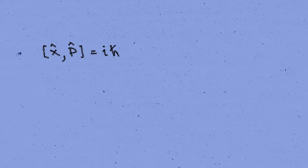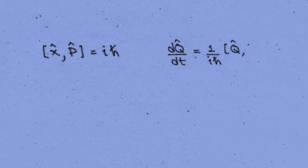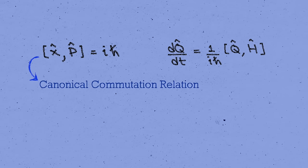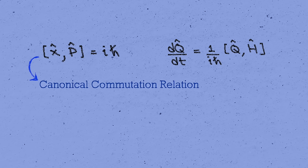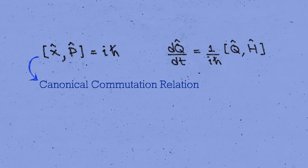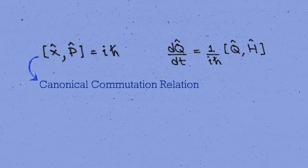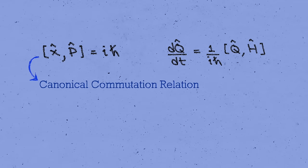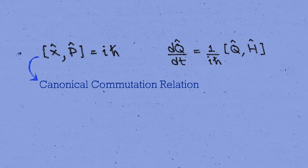If you've studied some quantum mechanics before, you've likely run into one or both of these fundamental equations. The first is called the canonical commutation relation between the position operator x and the momentum operator p. It's one of the defining equations of quantum mechanics, and it's what leads, for example, to the Heisenberg uncertainty principle that says you can't know the position and momentum of a particle at the same time.